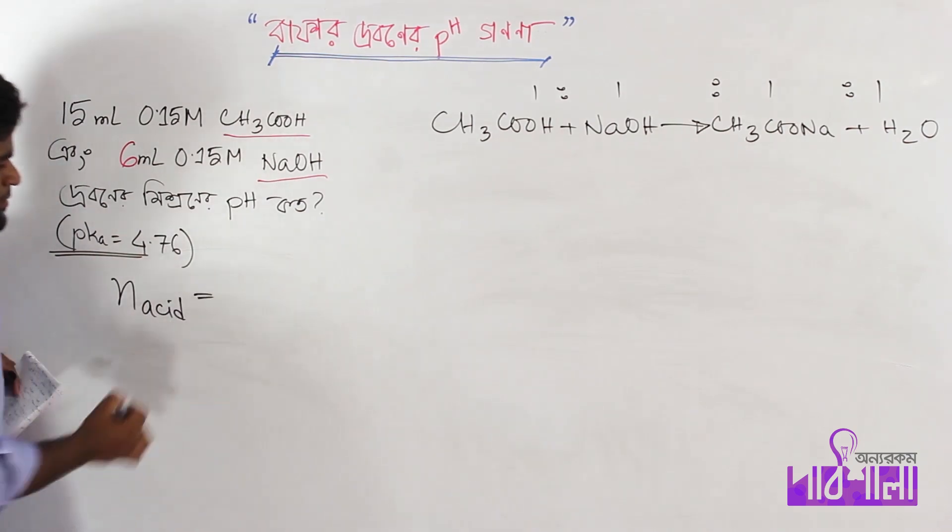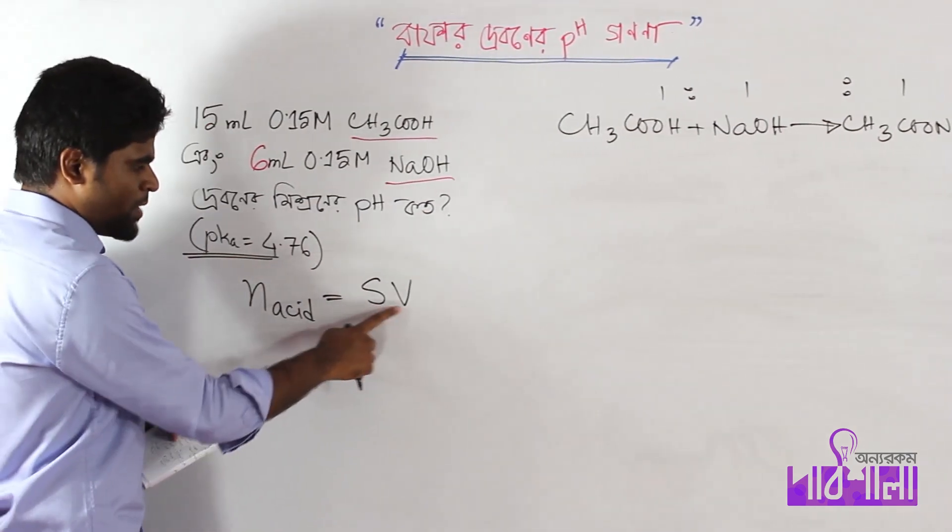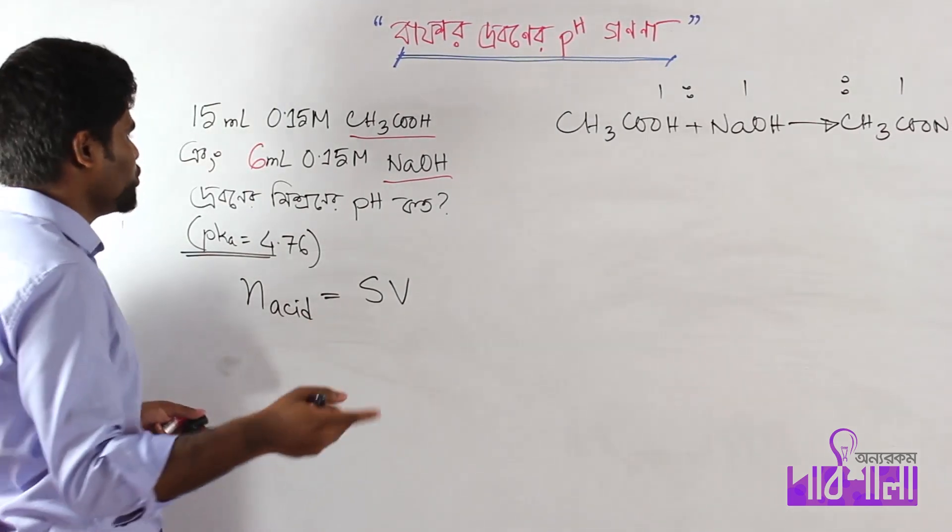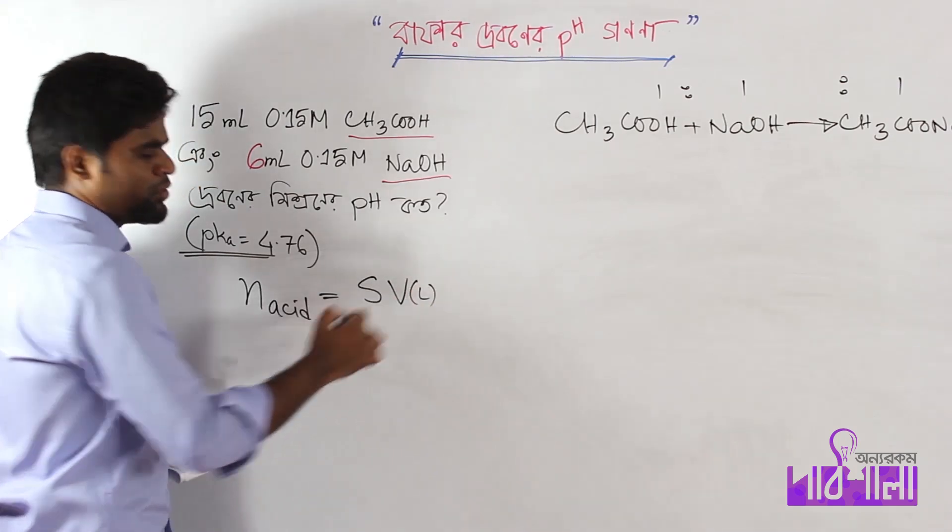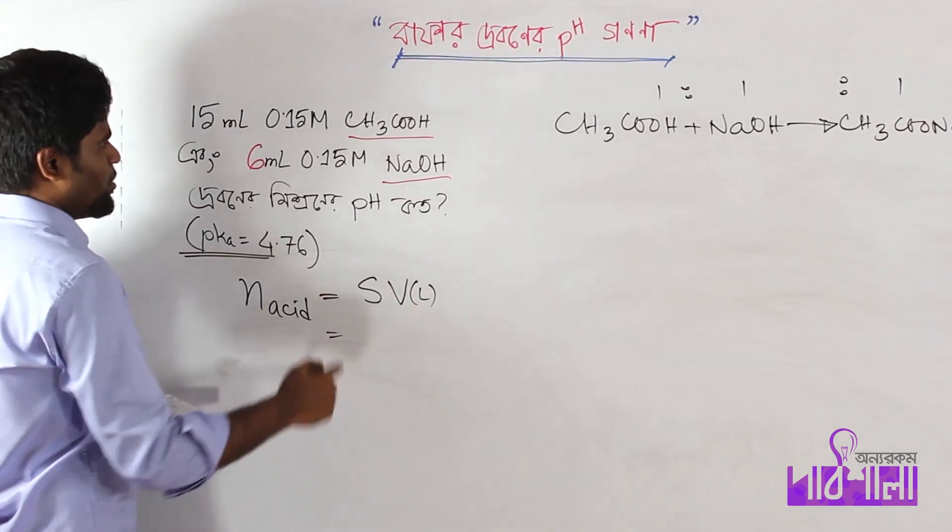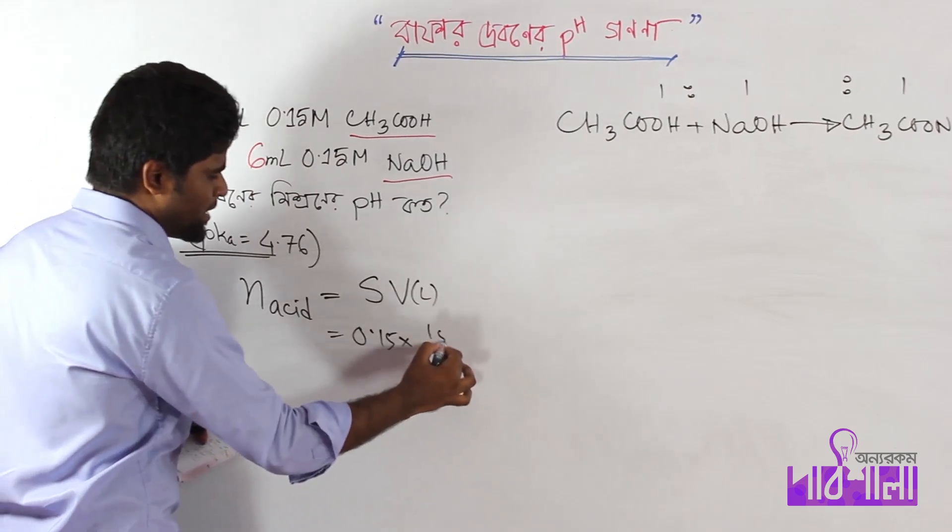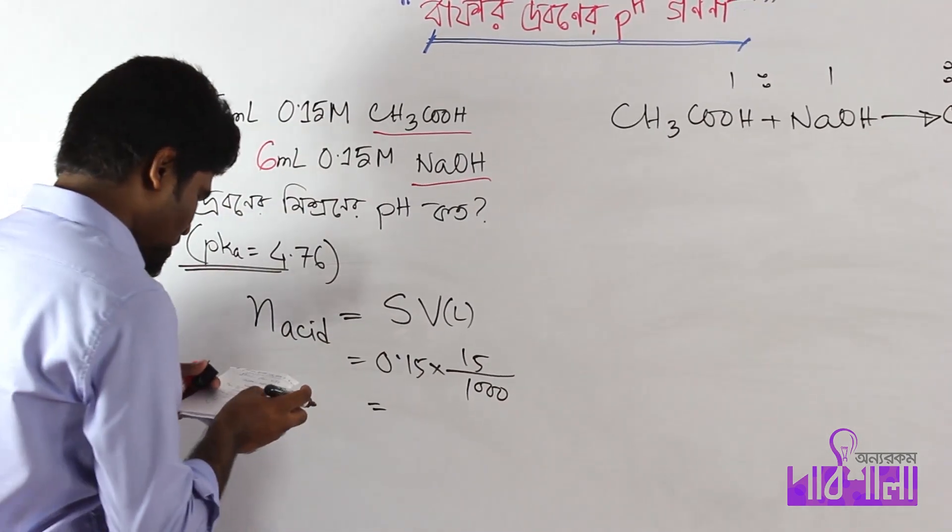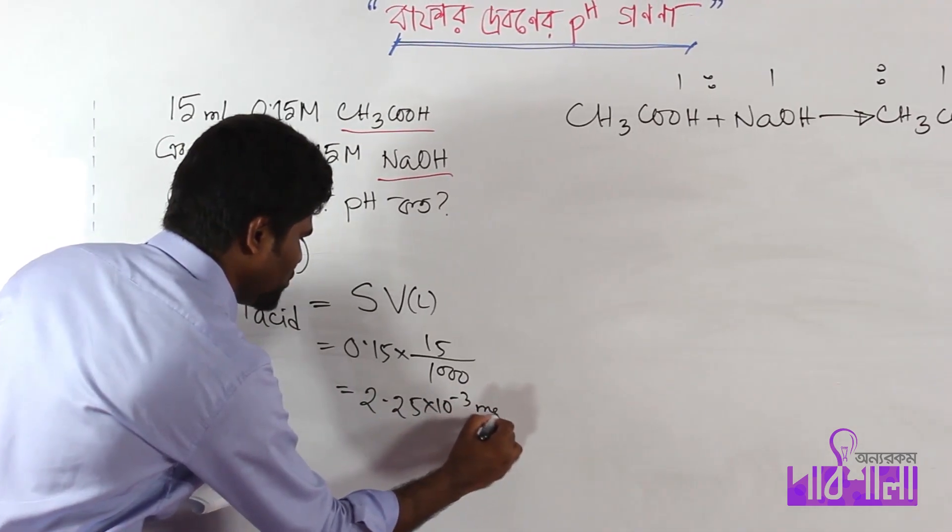n of acid equals molarity of acid times volume of acid. The molarity is 0.15. If you give the volume as 15 ml, then the mol of acid is 2.25 into 10 to the power of minus 3 mol.